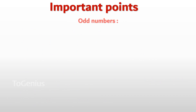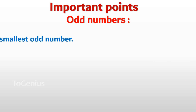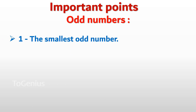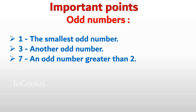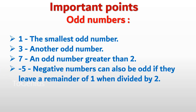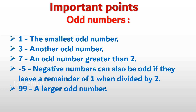Important Points — Odd Numbers. Number 1 is the smallest odd number. Number 3 is another odd number. Number 7 is an odd number greater than 2. Negative numbers can also be odd if they leave a remainder of 1 when divided by 2 — for example, minus 5. 99 is a larger odd number.